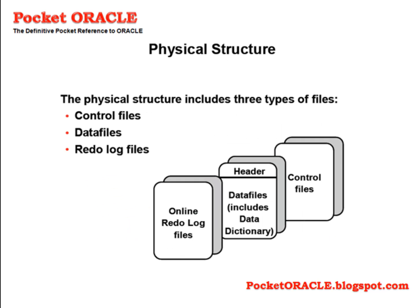Every database has one control file, but you can have up to ten copies of it. The control file is small but vital. It contains pointers to the rest of the database — the locations of the online redo log files and of the data files. It also stores information required to maintain database integrity, including various critical sequence numbers and timestamps. The control file will usually be no more than a few megabytes in size, but you can't survive without it.